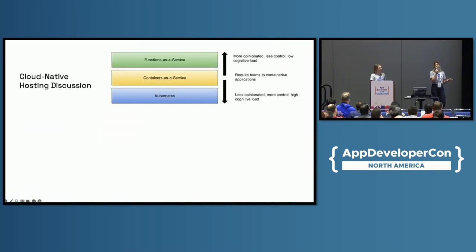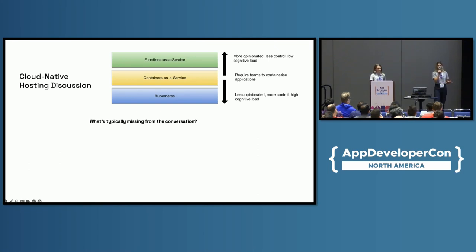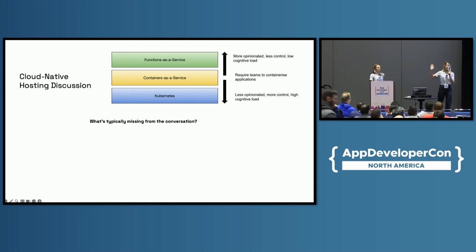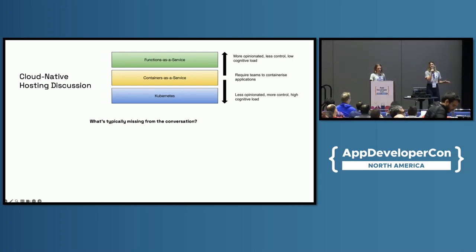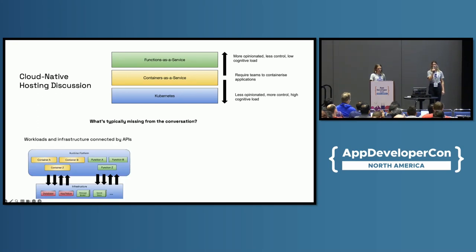So yeah, this is something I just wanted to bring up. How many of you, in the past one to three years, have had conversations internally about different kinds of hosting platforms? Kubernetes, should we go CaaS? Should we go FaaS? Debates over which hosting platform to use, which cloud provider to use, how abstracted you want the infrastructure that your applications are running on top of.